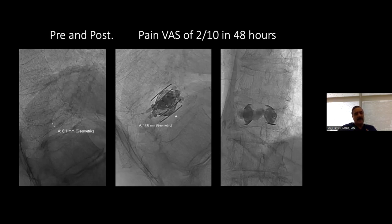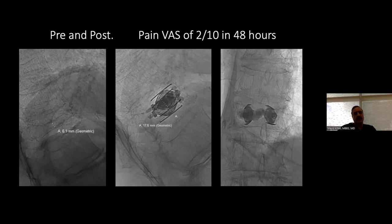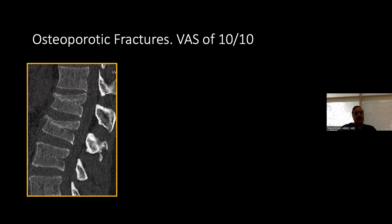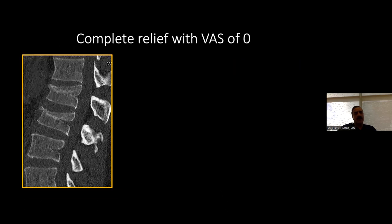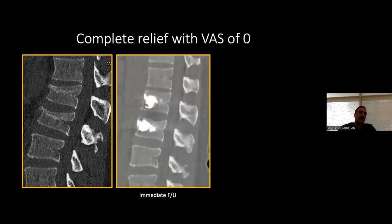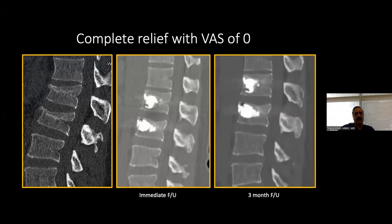For moderate to severe compression fractures, I use implants — aim A is pain palliation and aim B is to restore as much height as possible. Another example: osteoporotic fractures with 10/10 pain at junctional levels T12 and L1. We placed SpineJacks at both levels — comparing pre and post, you can see almost normal, pre-fracture level height restoration at both levels — and the patient did very well with a VAS score of zero.